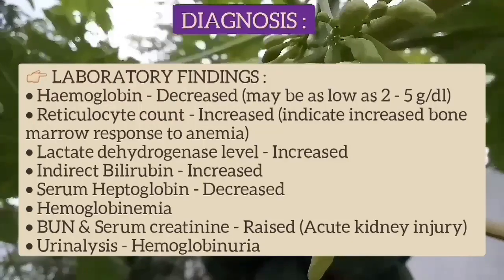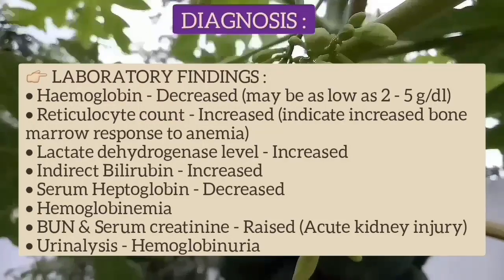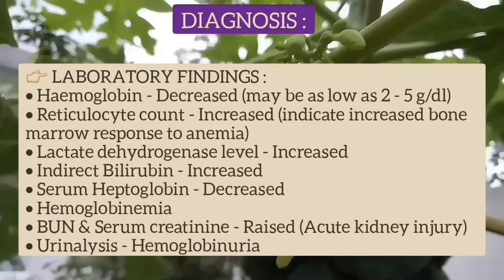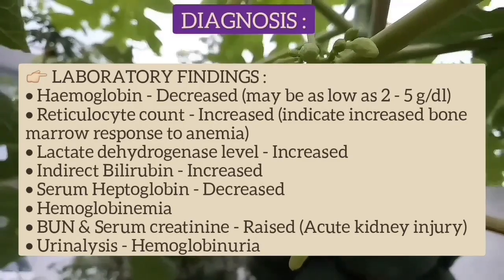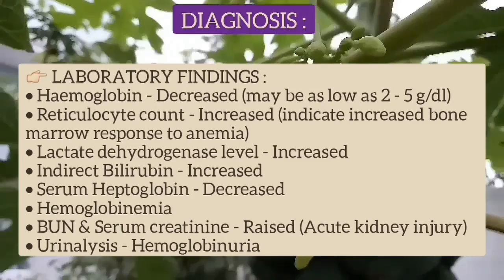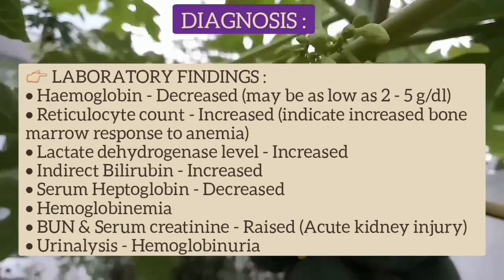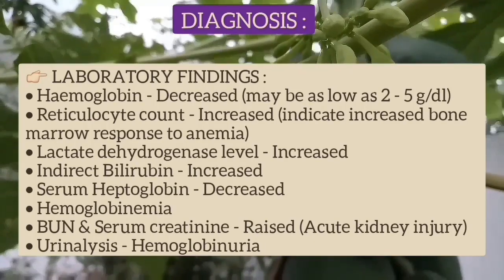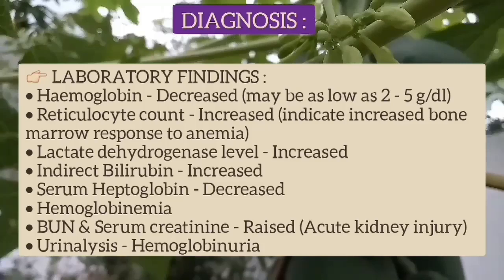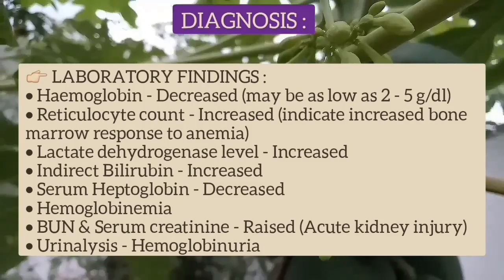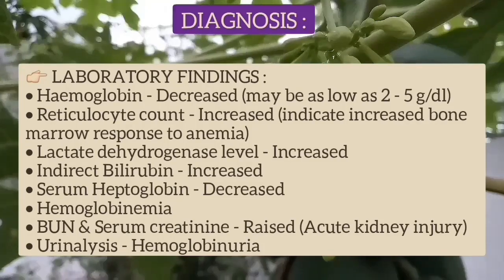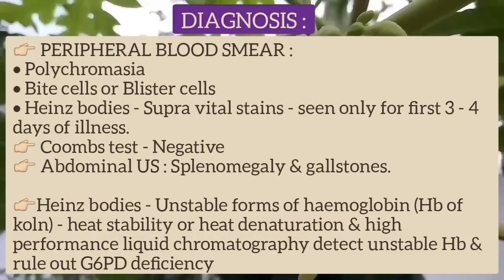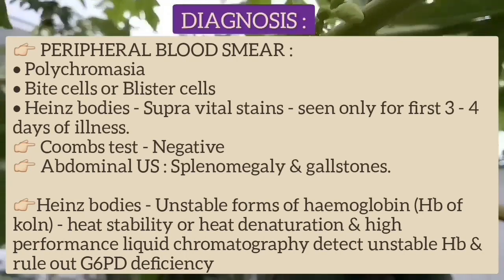During an episode of acute hemolysis, hemoglobin is decreased, reticulocyte count is increased, lactate dehydrogenase level is increased, indirect bilirubin is increased, and serum haptoglobin is decreased. There is free hemoglobin in the plasma, which is hemoglobinemia. Blood urea nitrogen and serum creatinine may be raised in cases of severe hemolysis. Urine shows hemoglobinuria. Peripheral blood smear on routine staining reveals polychromasia with bite cells or blister cells.